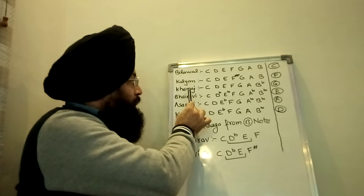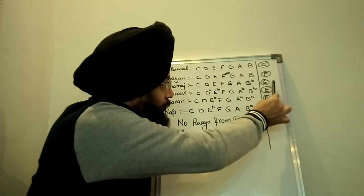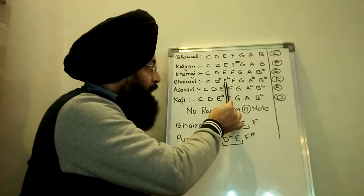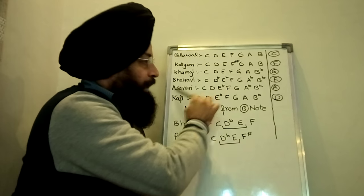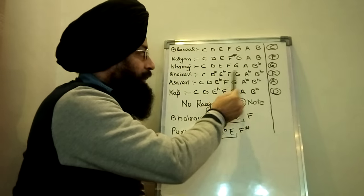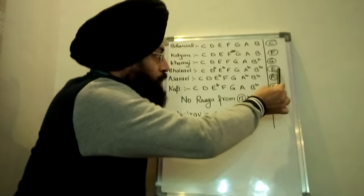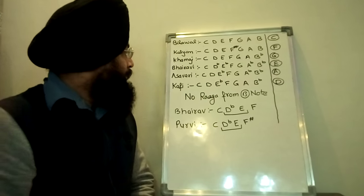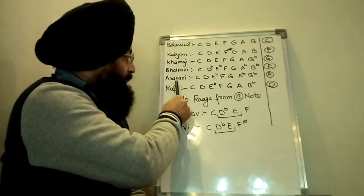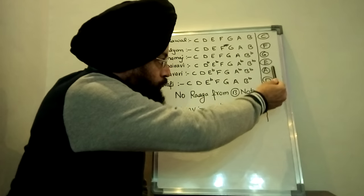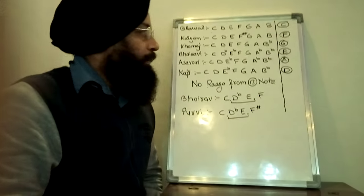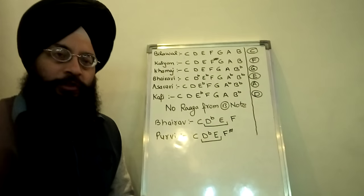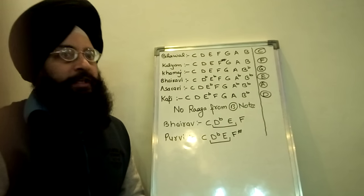Same is the case with Khamaj That — you can start it from G note. Bharavi, which is a that having 4 flat notes — Re, Ga, Dha, Ni are the flat notes — so if you start it from E note, there will be no slider movement. Similarly, Asavari and Khafi: you start them from A and D respectively, taking A and D as the Sa of that particular song, and there will be no slider movement.